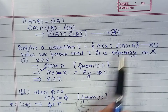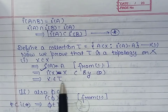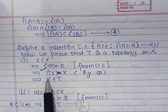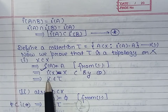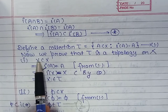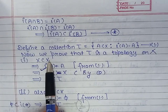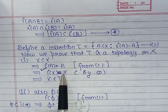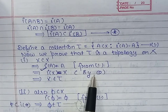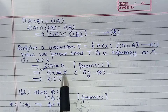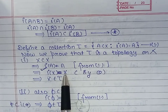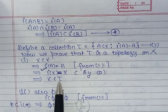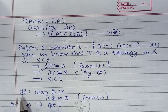First condition: we prove that X belongs to τ. To show X ∈ τ, we need I of X equal to X. Since X is a subset of X and by the second property given in the statement, I of X equals X. So X belongs to the collection τ.